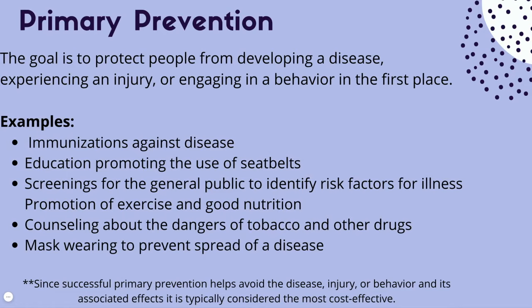Promoting exercise and good nutrition is also primary prevention — if people have a good diet and exercise, they're less likely to develop health conditions like high blood pressure and obesity. Counseling about the dangers of tobacco and other drugs, with programs going into schools to educate about side effects and health impacts, is another example. The purpose is to stop people from engaging in these behaviors so you don't have to deal with the consequences further down the continuum.